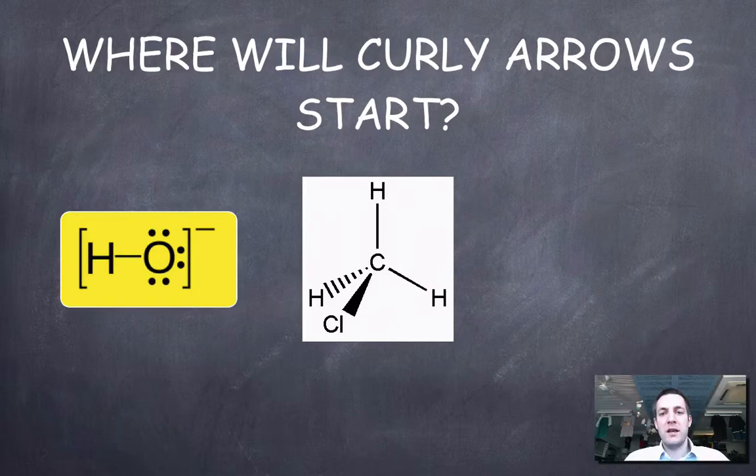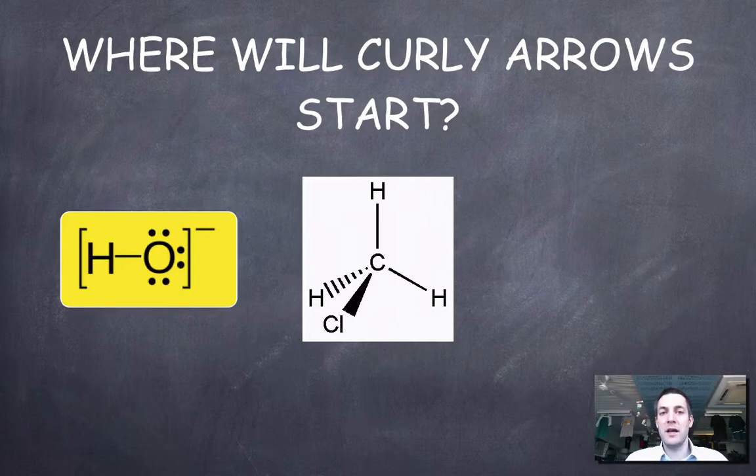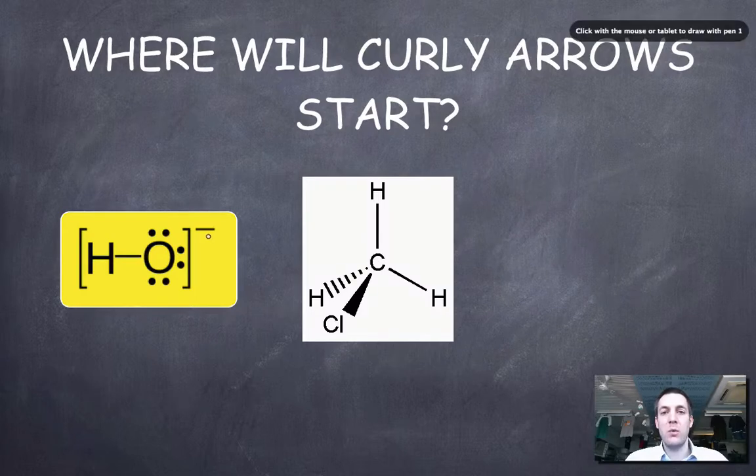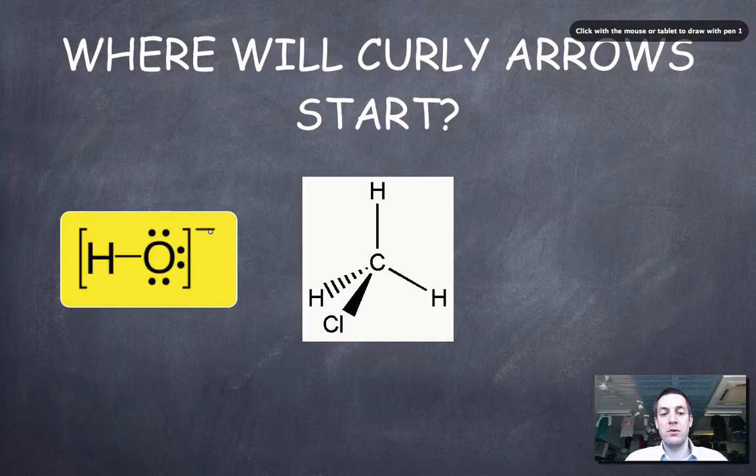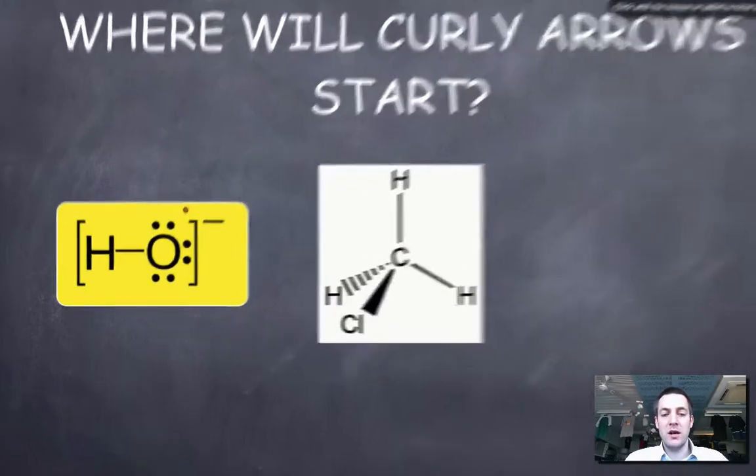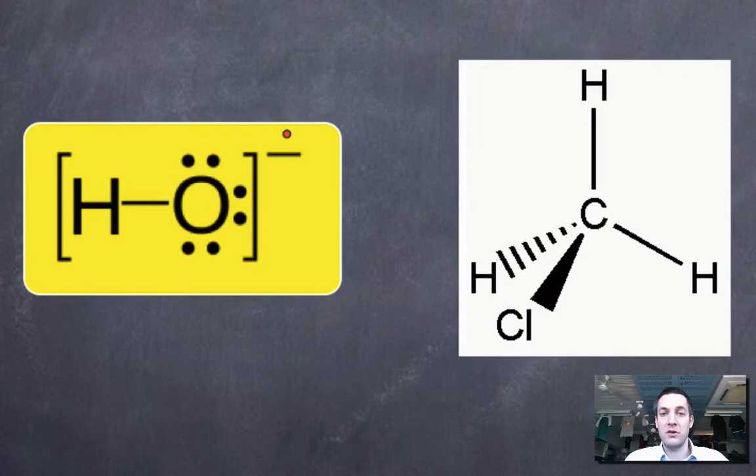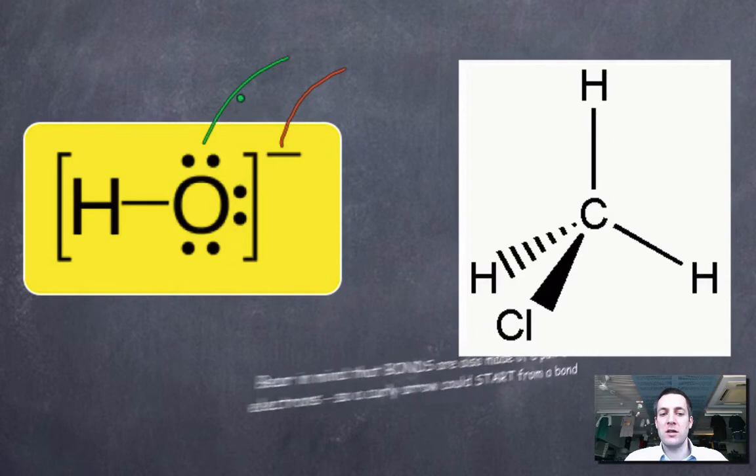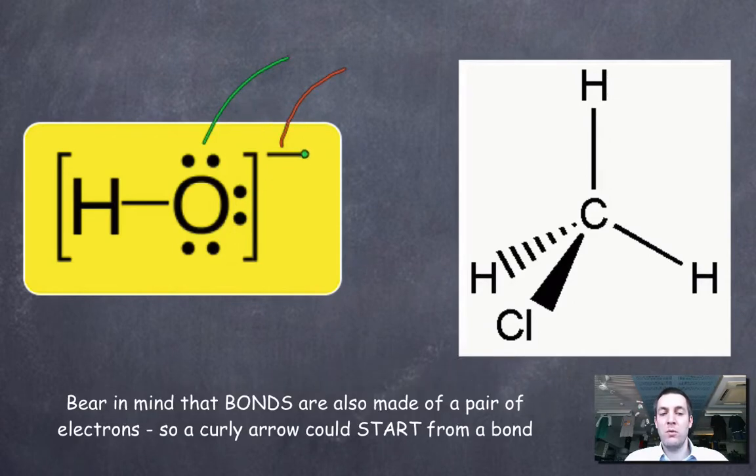So let's think about where they're going to start. If you can master these principles and always have them in mind then the mechanisms are so much easier to learn. Now a curly arrow will always start where the electrons are because they're showing the movement of a pair of electrons. We can start them either from a negative charge if our nucleophile has a negative charge, but the hydroxide ion is pretty much the only nucleophile we'll deal with. So it could start there or if we've shown the pairs of electrons in our nucleophile we can start them from a pair of electrons.